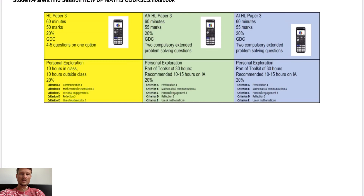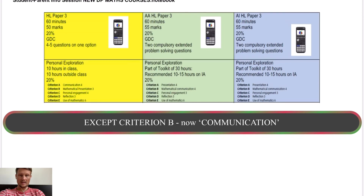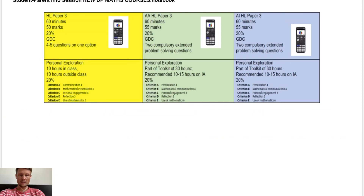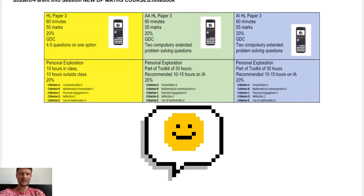There are slight changes to the IA criteria — A, B, C, D, E — the names remain the same but some point allocations have changed. Mathematical presentation was 3 points in the old course; now called Mathematical Communication, it's 4 points. Personal Engagement was 4 points and has gone down to 3 points, which is a good thing for students in the new course.